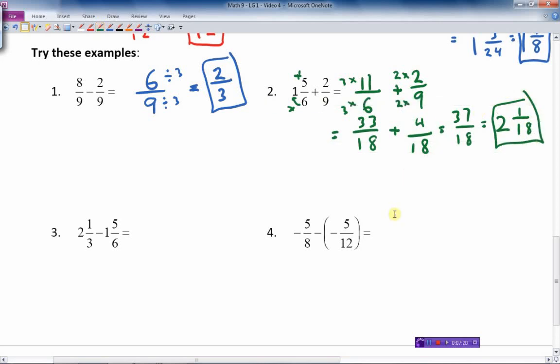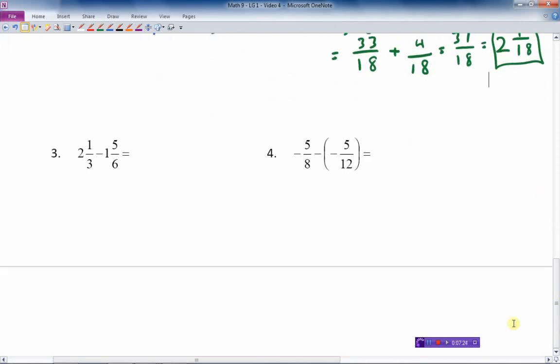I did that quickly, but I think that makes sense. We don't have to spend too much time on that question. Going to the last couple of questions here. First one. Number three. Change that to an improper fraction. Multiply that. Add the one. Gives me seven-thirds. Minus. Multiply this. Six times one. Plus five. Is eleven over six.